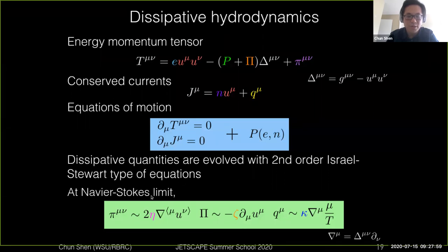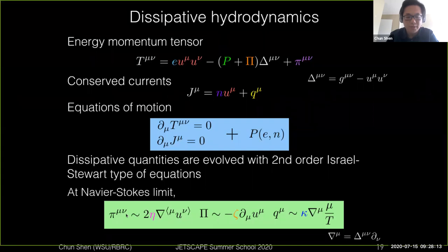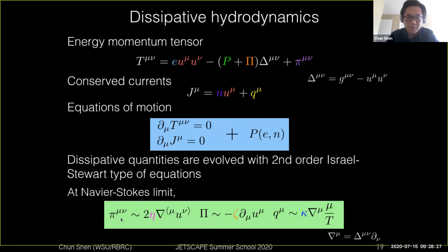The Israel-Stewart equations are a relaxation type compared to the Navier-Stokes limit. You can think of it as a backbone envelope — the shear stress tensor evolves controlled by the gradients of the velocity field times the shear viscosities, and π_μν evolves towards that according to a relaxation equation. The relaxation time is a second-order transport coefficient inside these hydrodynamic equations.